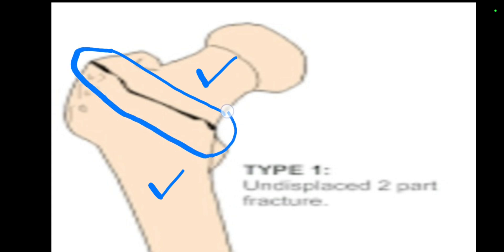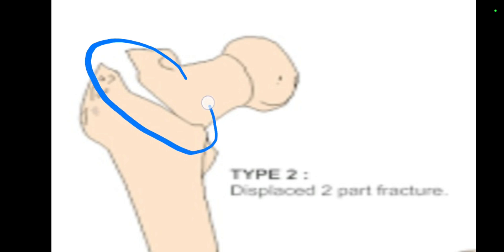This is Type 2. In this type, we have displacement. You can appreciate the displacement in comparison to the previous Type 1, in which there was no displacement. This is also a two-part fracture — first part and second part — but we are having displacement. So this is Type 2 of the Evans classification.